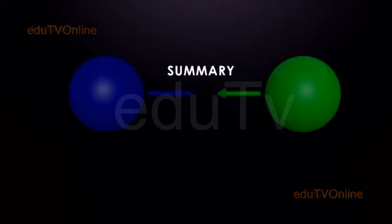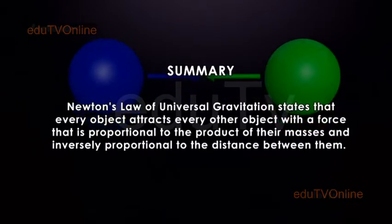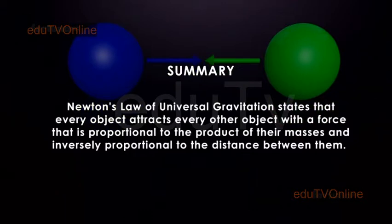Summary: Newton's law of universal gravitation states that every object attracts every other object with a force that is proportional to the product of their masses and inversely proportional to the distance between them.